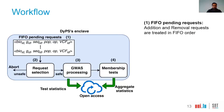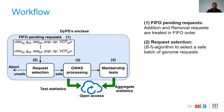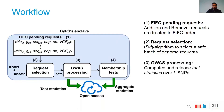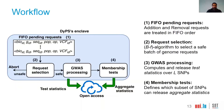Now let's see the workflow of our approach. We have two FIFO queues: one for additions and another for removals, and genome operations are treated in FIFO order. Next, we run our request selection mechanism to find a safe batch of genome operations to compute the GWAS. In the third step, we process the test statistics over the SNPs of the study using the selected genomes. Finally, in the fourth step, we run the membership test to find which subset of SNPs can also safely release aggregate statistics.